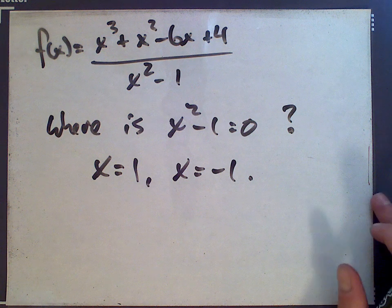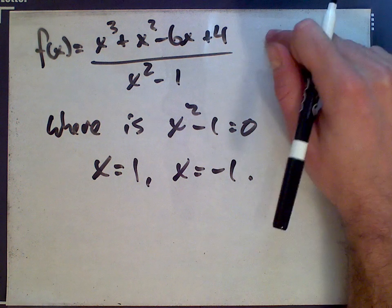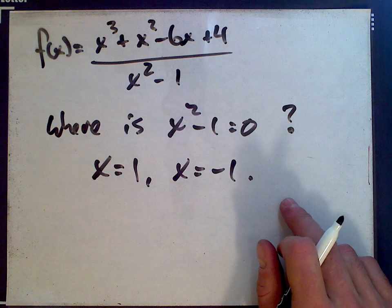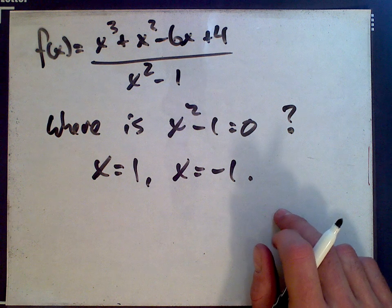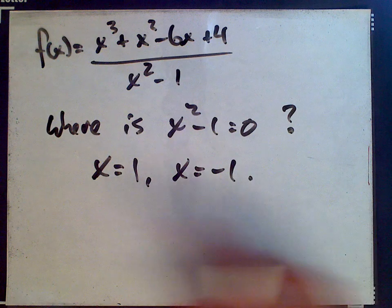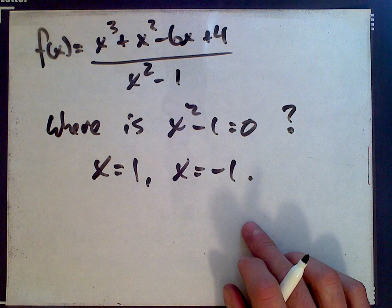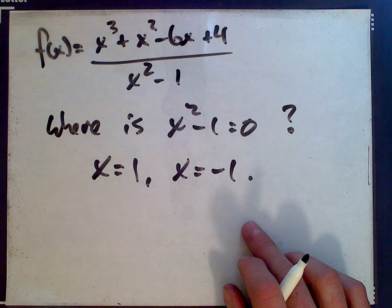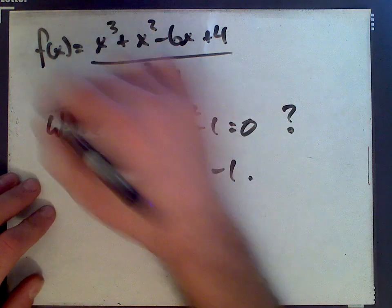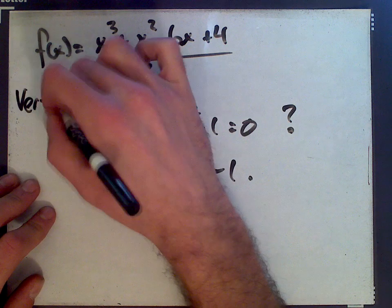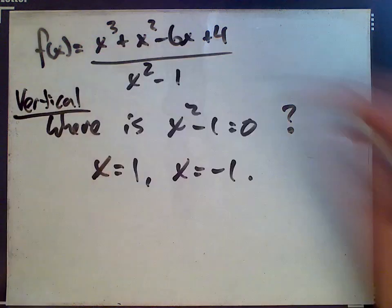They're not necessarily asymptotes because we need to check to see whether the numerator is zero at either of these points. If the numerator happens to be zero as well at one or both of these points, then we may have one or no vertical asymptotes. So this is we're testing to see if we have vertical asymptotes.